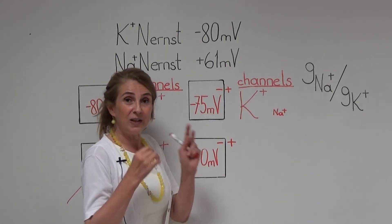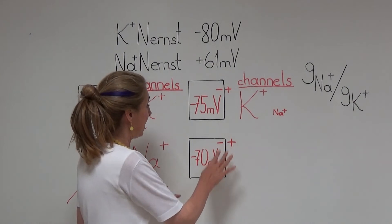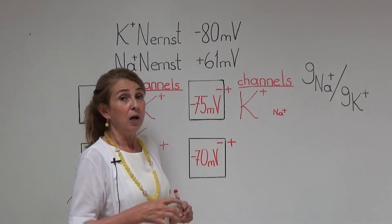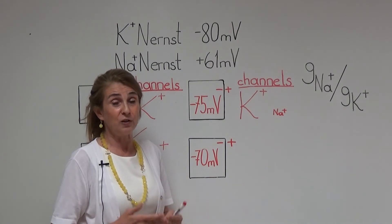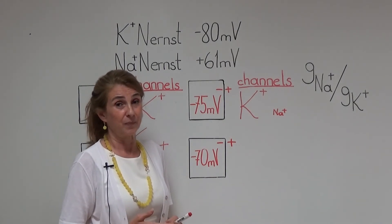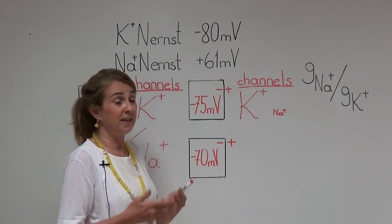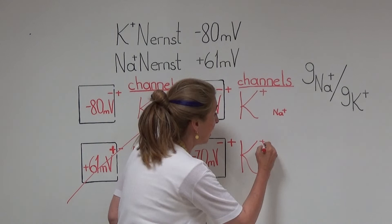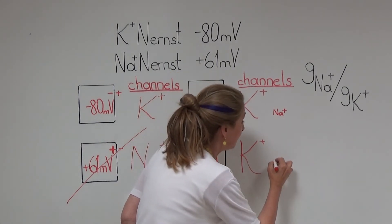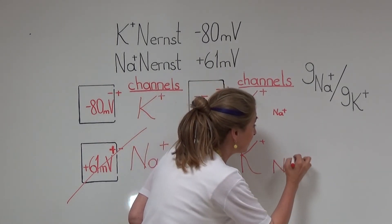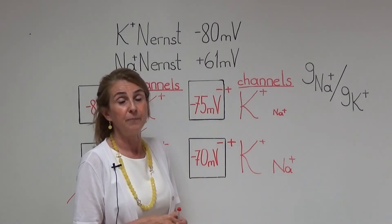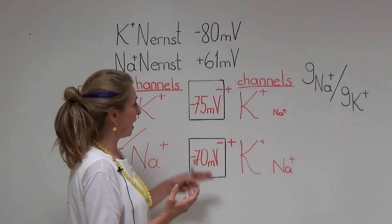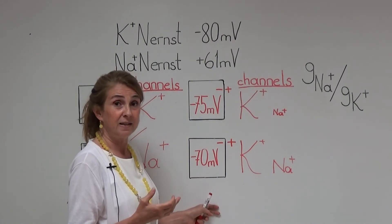Now let us move on to the fourth cell. Here, the resting membrane potential is minus 70 mV. You are likely going to say that there are many potassium channels and some sodium channels present on the membrane of this cell — but then, what is the difference between cell number 3 and cell number 4?